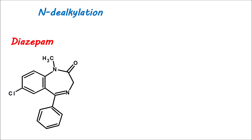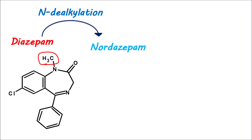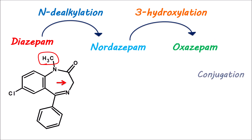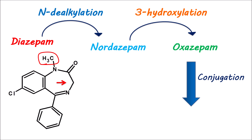Diazepam can undergo N-dealkylation. A methyl group is present on the first nitrogen, and this methyl group is removed to give the metabolite nordiazepam, also called nordazepam, which is one of the long-acting active metabolites. In the next step, it undergoes 3-hydroxylation, where a hydroxyl group is attached at the third position to make it polar and water-soluble. Nordiazepam is converted into oxazepam by this process. Finally, oxazepam is conjugated with glucuronic acid, and this conjugate is excreted in the urine. Most benzodiazepines are metabolized by these two reactions: N-dealkylation and 3-hydroxylation.